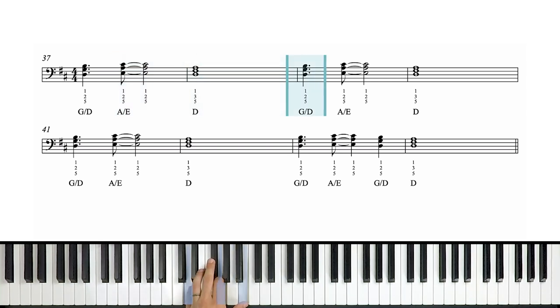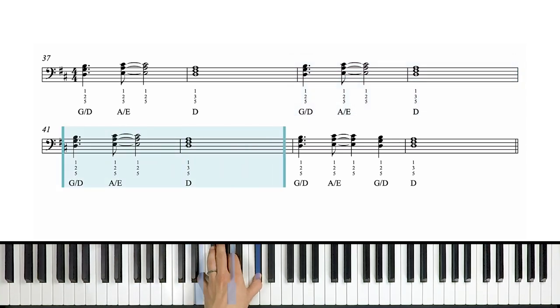Second phrase, same thing. One and two and three and four and. One, two, three, four. Third phrase, same thing again. One and two and three and four. One, two, three, four. Now the fourth phrase is almost the same, but we change it up a little bit. It starts the same. One and two and three and. But here, instead of holding out the A over E for the rest of the measure, we're going to jump back down to the G over D on beat four. Then play D in the second measure of this phrase, okay? So it's almost the same, but we're adding one more G over D.